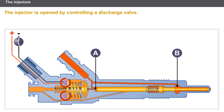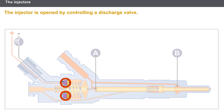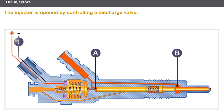The electromagnet is supplied. The electromagnet opens a discharge valve, which allows the flow of fuel towards the fuel return circuit. The fuel pressure at A drops, while the fuel pressure at B remains the same. The pressure imbalance pushes back the injector needle, and the fuel is sprayed.